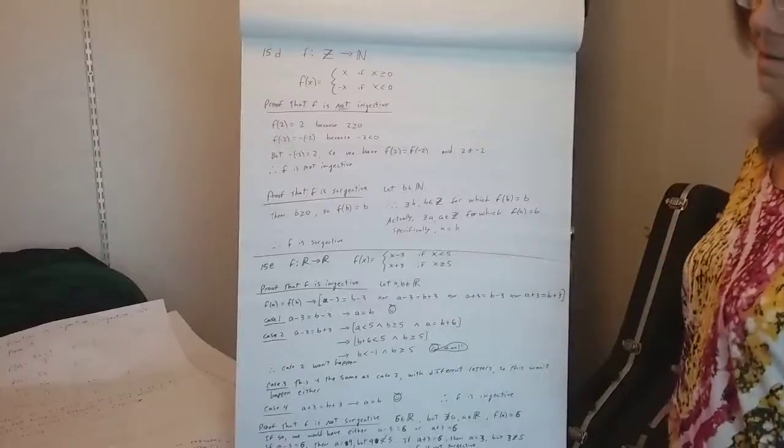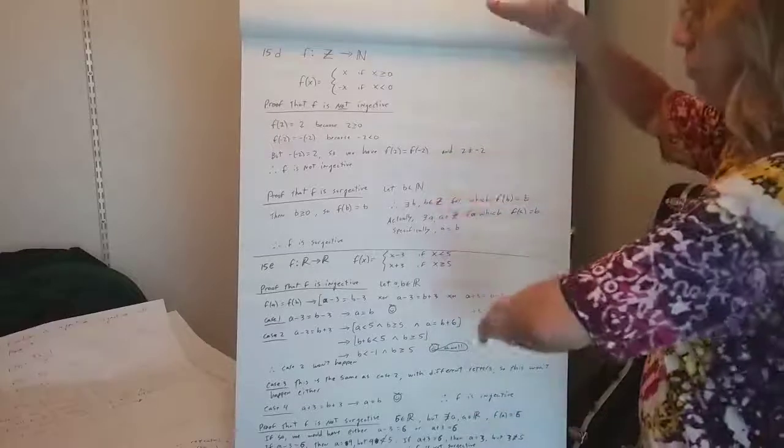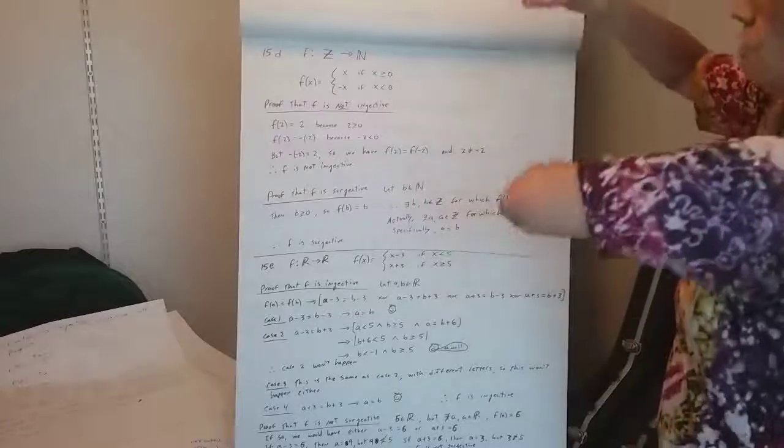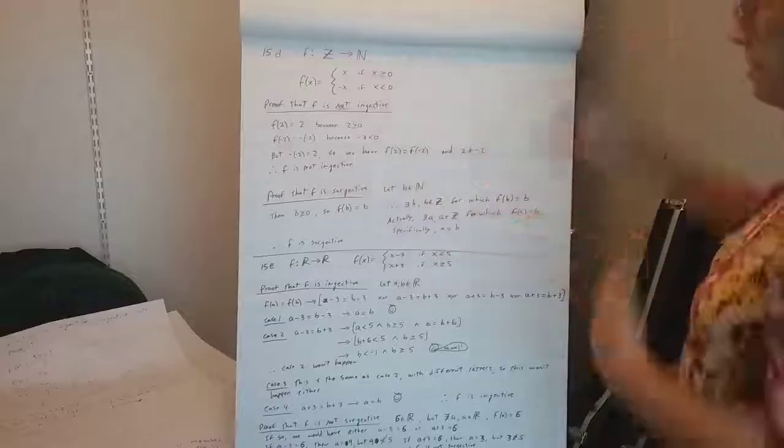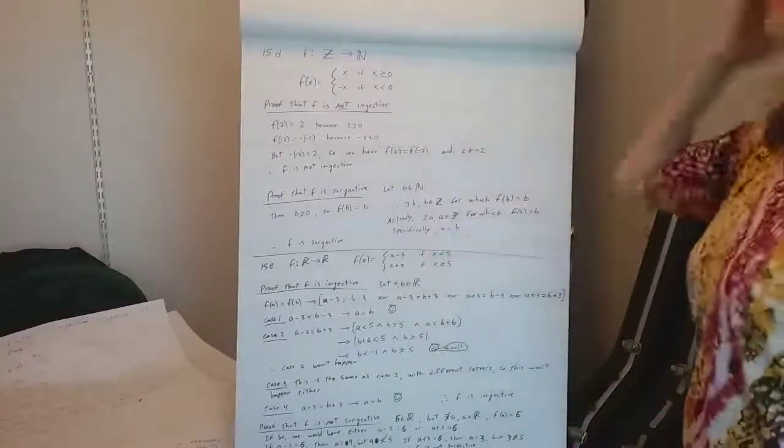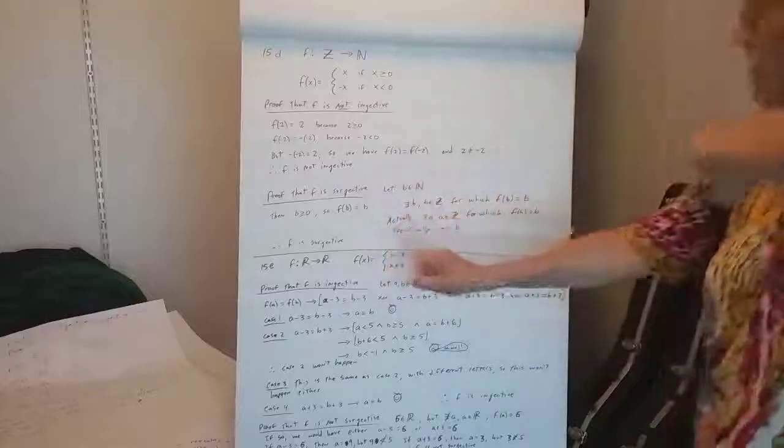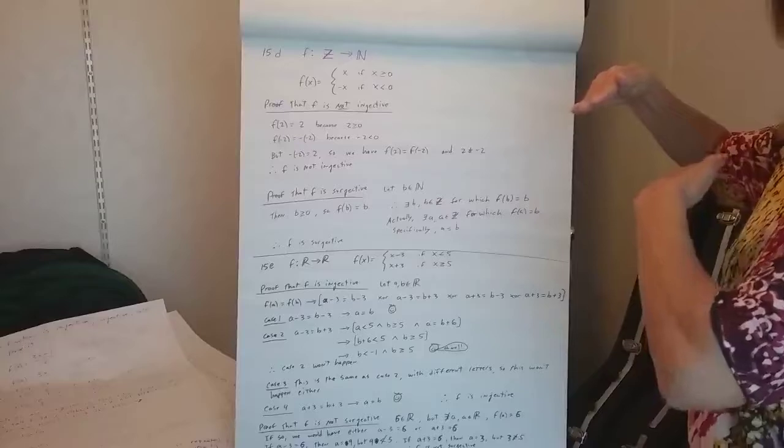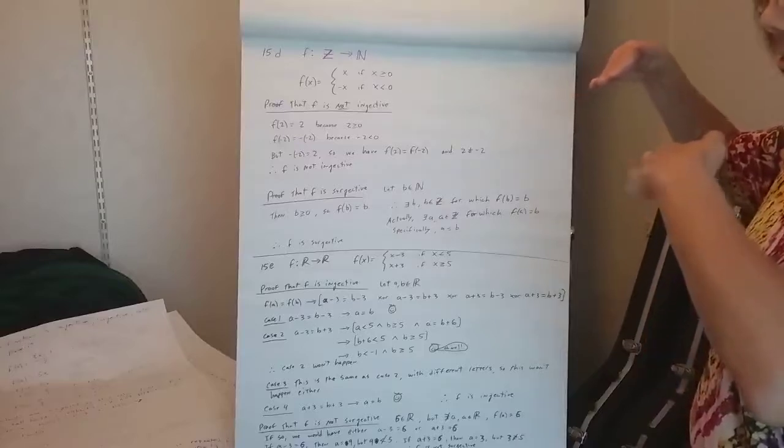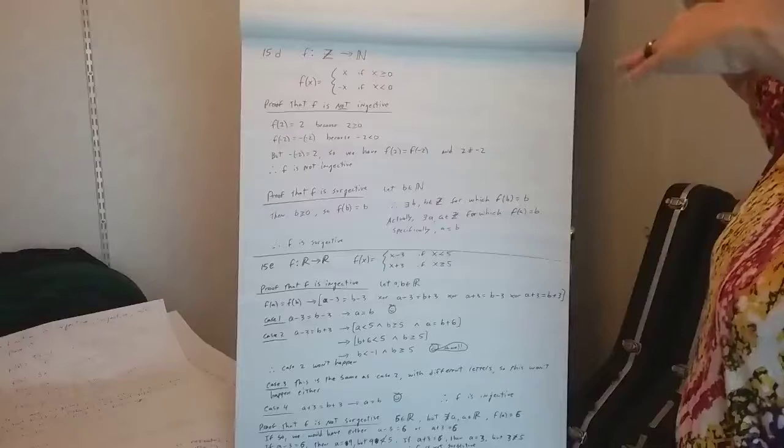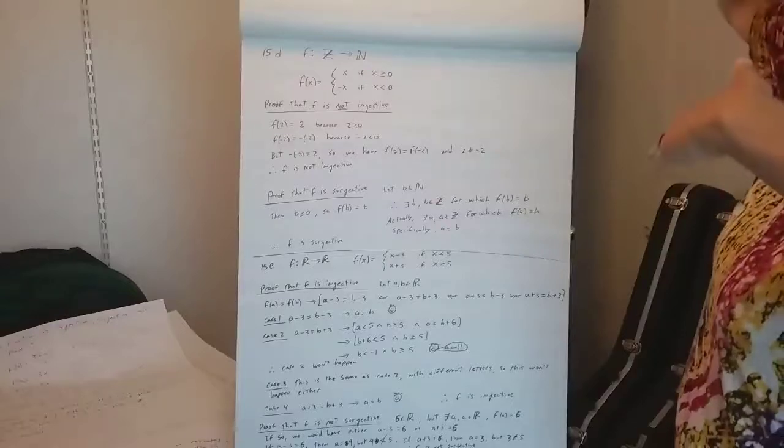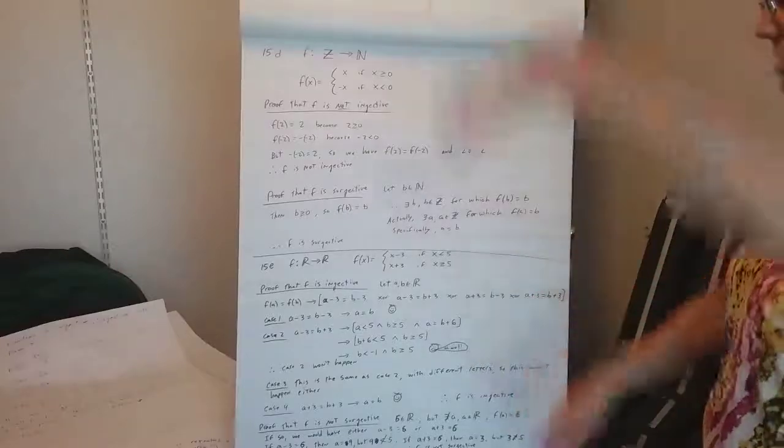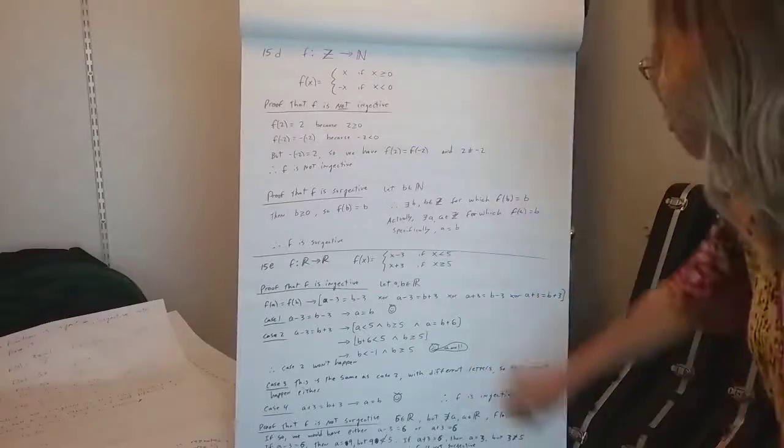So basically anything piecewise, there's either an overlap, where you got the same y value here as you do here, or there's a jump discontinuity at 5, generally, unless these things are pieced together at 5, right? So if there's an overlap, then it's not injective, and then if there's not an overlap, and there's like a gap, then it's gonna not be surjective, because then there'll be missing some y values in there.